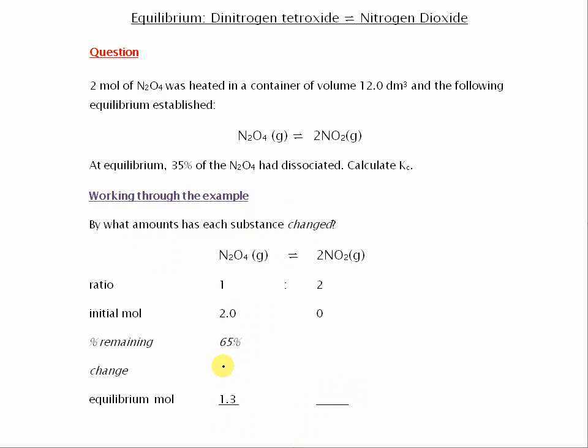So therefore, the change was 0.7 mol. Now, because this is in a 1 to 2 ratio, the amount by which the NO2 will have changed would have been 1.4. In fact, it will have gone up by 1.4. So there's the equilibrium mole of the NO2.